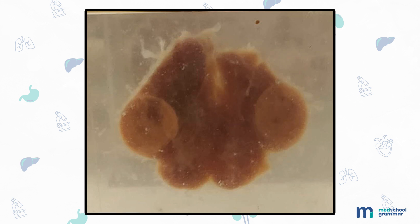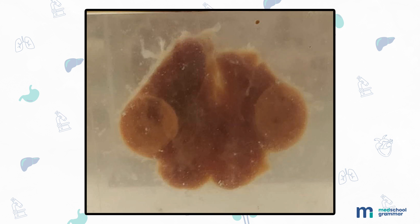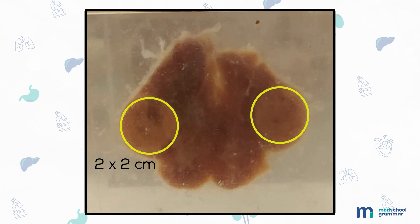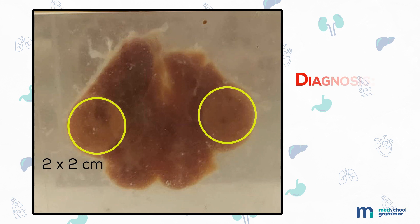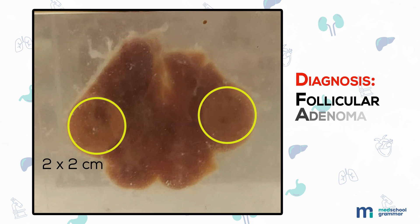Moving on, we have a specimen of thyroid lobe measuring 5 by 3.5 by 1 centimeter. The external surface is nodular. Cut section shows a single well-circumscribed mass, 2 by 2 centimeters, grayish-white and solid, surrounded by normal thyroid parenchyma. No areas of necrosis or hemorrhage are seen in the mass. Diagnosis: follicular adenoma.